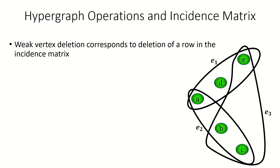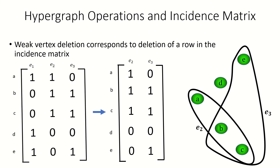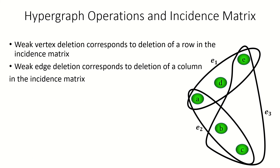Now, what happens if we weakly delete an edge? Let's weakly delete edge e sub 1 in this hypergraph. Here is the incidence matrix of the new hypergraph. Notice that the new incidence matrix is found from the original by deleting the column associated with the weakly deleted edge. That's the effect weak edge deletion has on the incidence matrix — it deletes the column corresponding to the deleted edge.